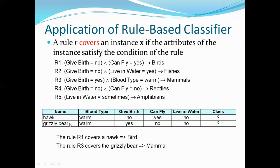For grizzly bear: give birth equals yes and blood type equals warm. Rule 3 says give birth equals yes and blood type equals warm — both conditions are satisfied, so it belongs to the mammals class. This is how rules are applied to a test set.